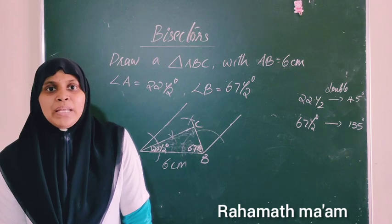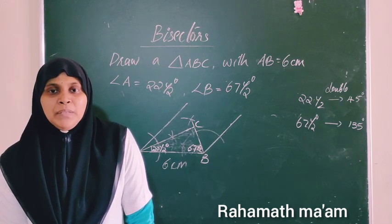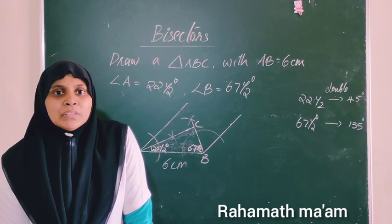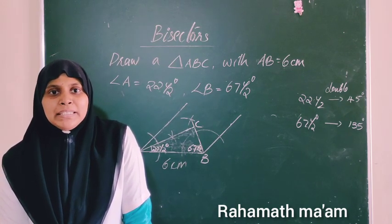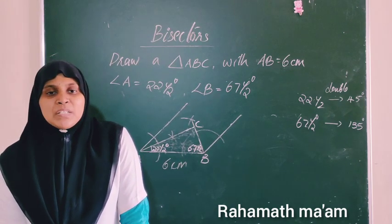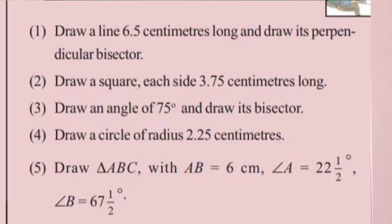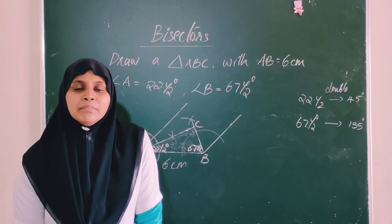So today we understood angle bisectors and line bisectors clearly. For homework, please do the related questions from your textbook. We will continue in the next class.